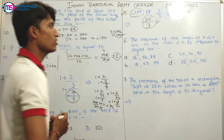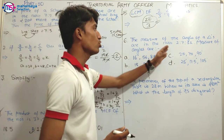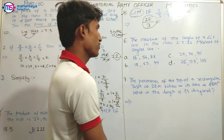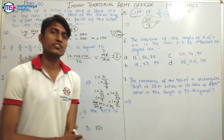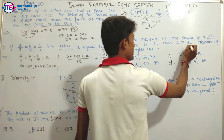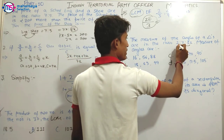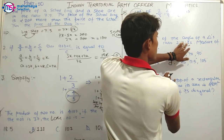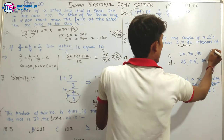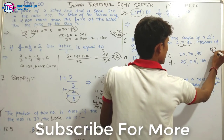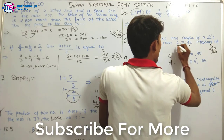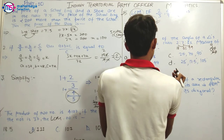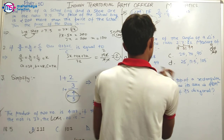Now, the measure of the angles of a triangle are in the ratio 2 is to 7 is to 11. The sum of angles of a triangle is 180 degrees. Adding the ratio parts: 2 plus 7 plus 11 equals 20. So the angles are 18 degrees, 63 degrees, and 99 degrees. That is your answer.